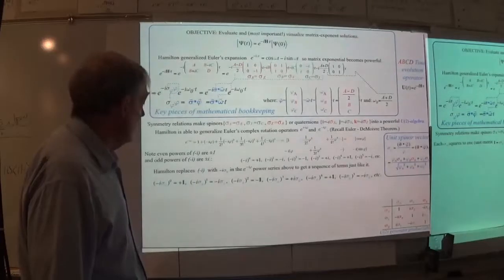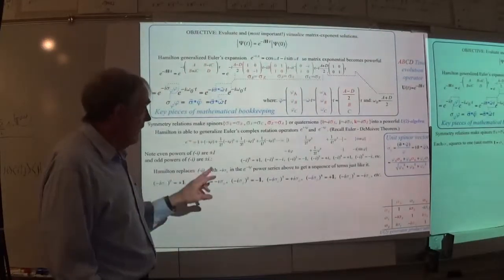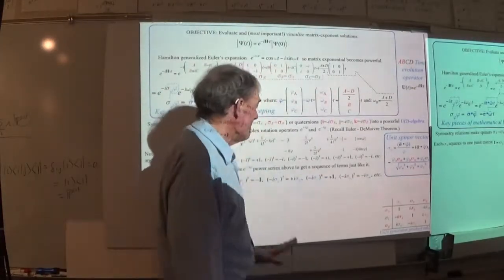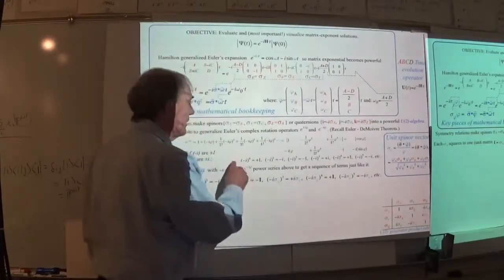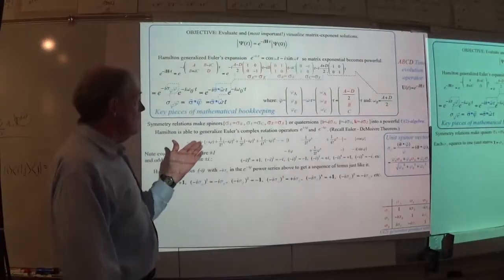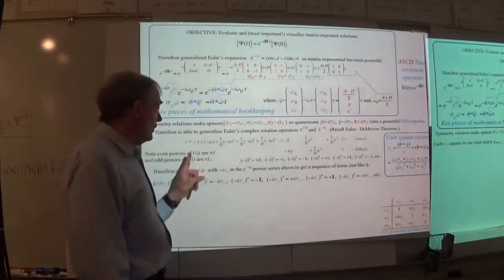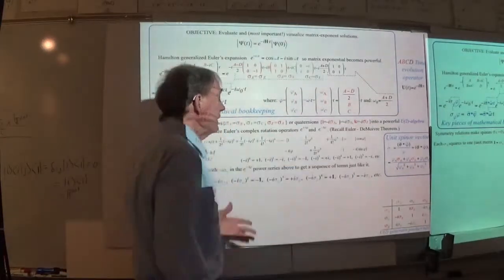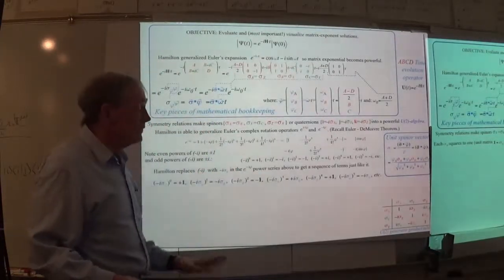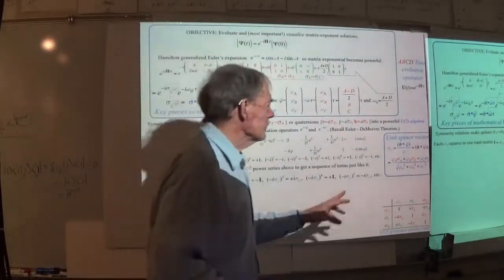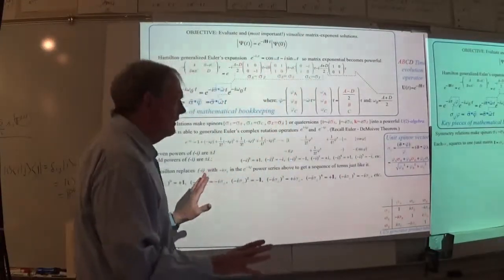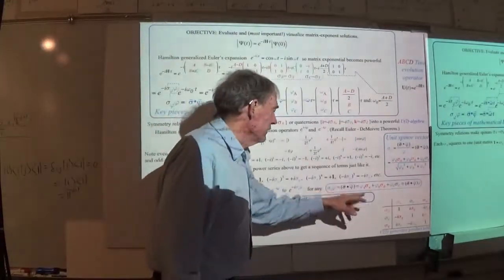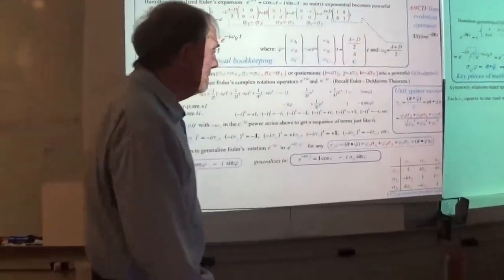The idea is that i times a sigma — that's a quaternion — squared, cubed, and the fourth power brings you back to the unit matrix, and then you just start over again. So the fact that that happens means I can get an exponential evaluated using this little thing: i times sigma-A, the original Hamilton quaternion. This is very powerful because what it does is take a thing like this — an exponential of a matrix — and turn it into a thing like that.